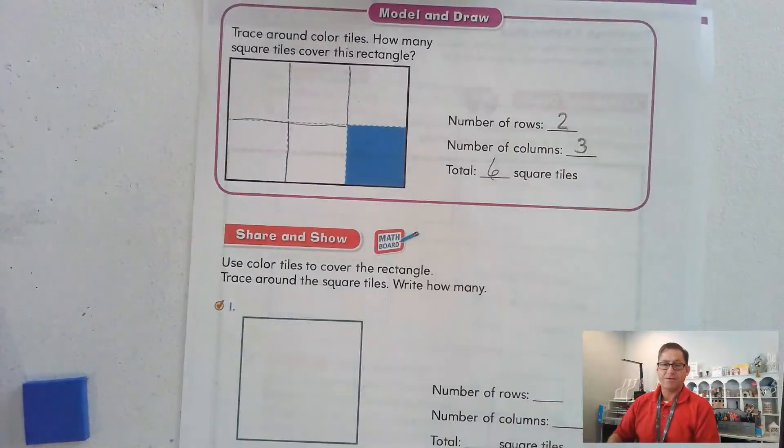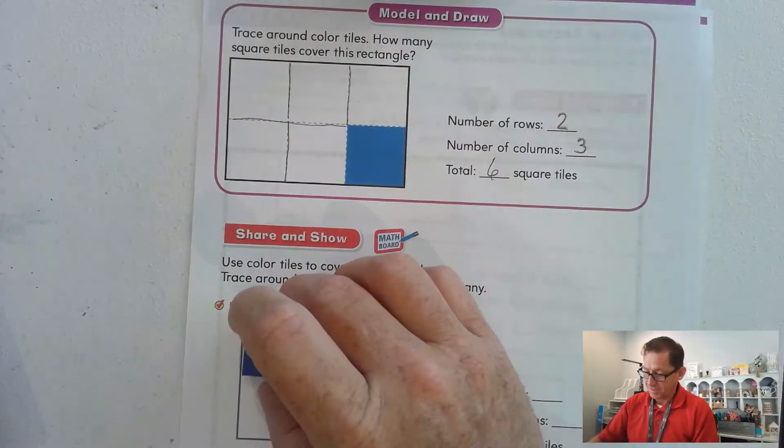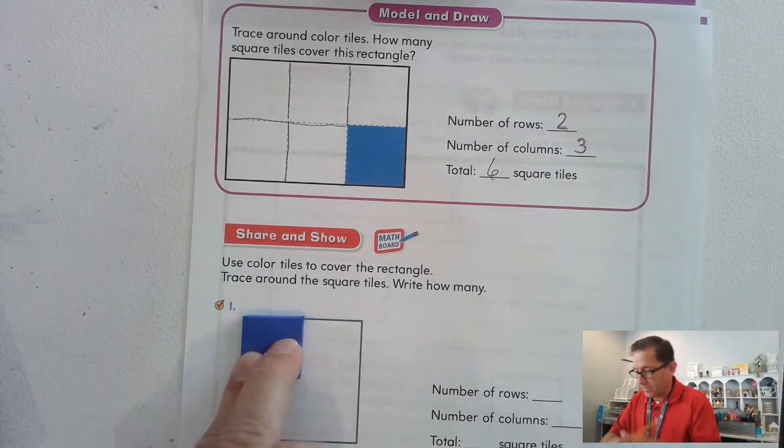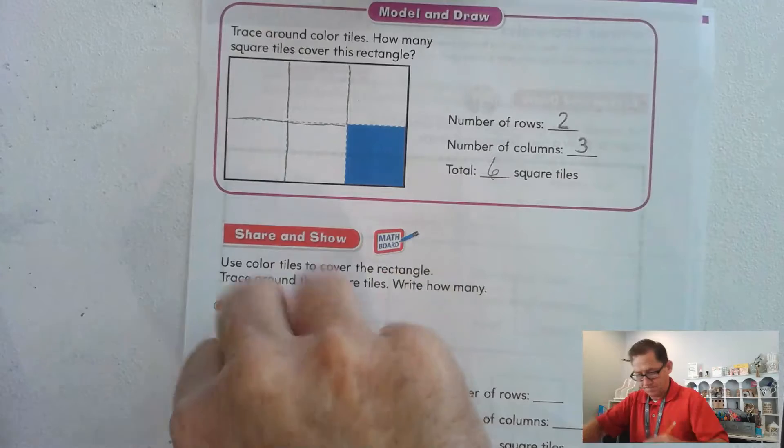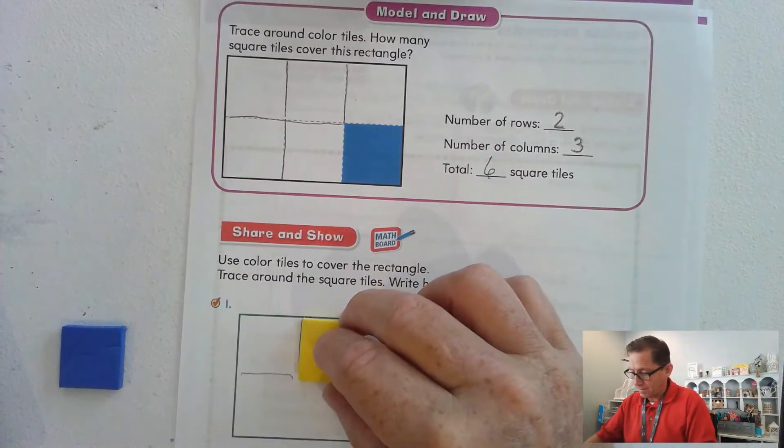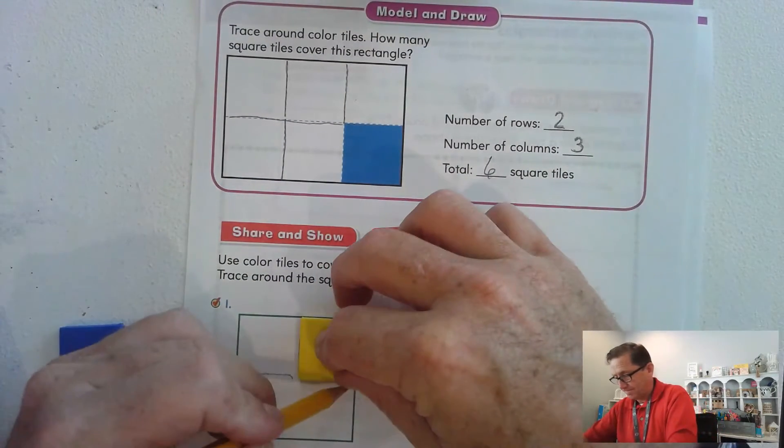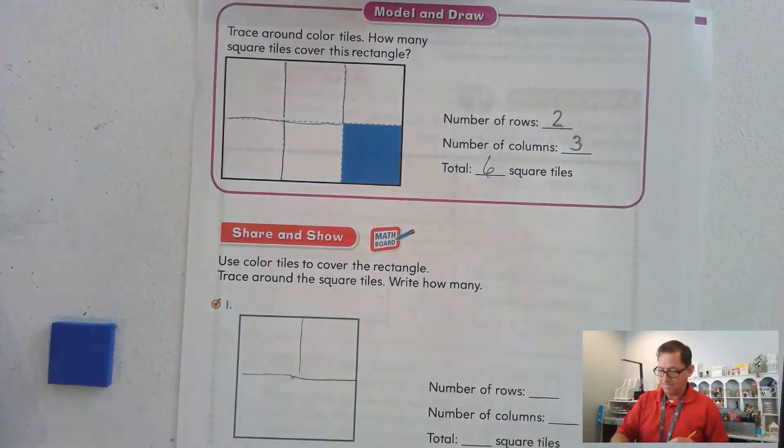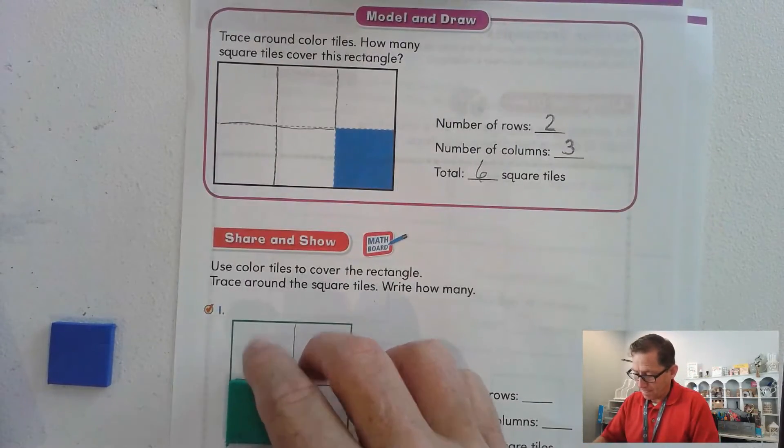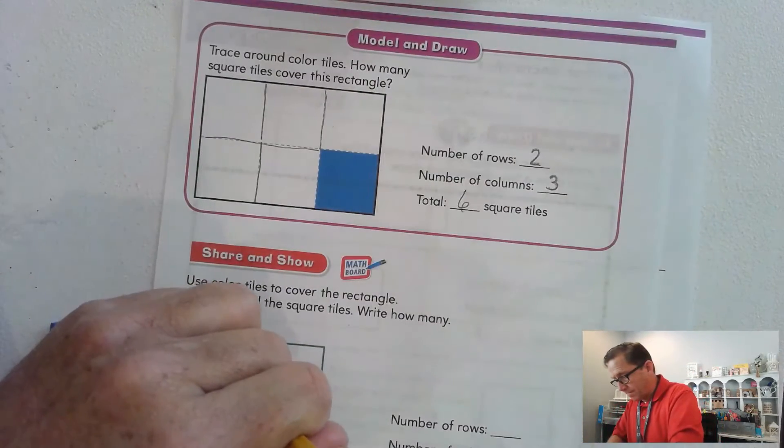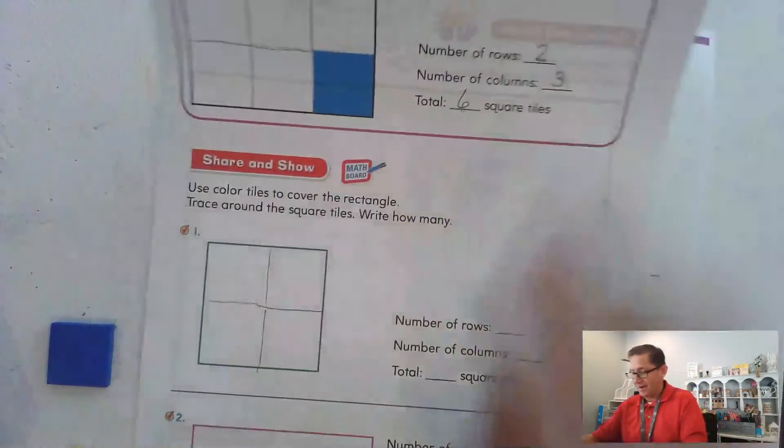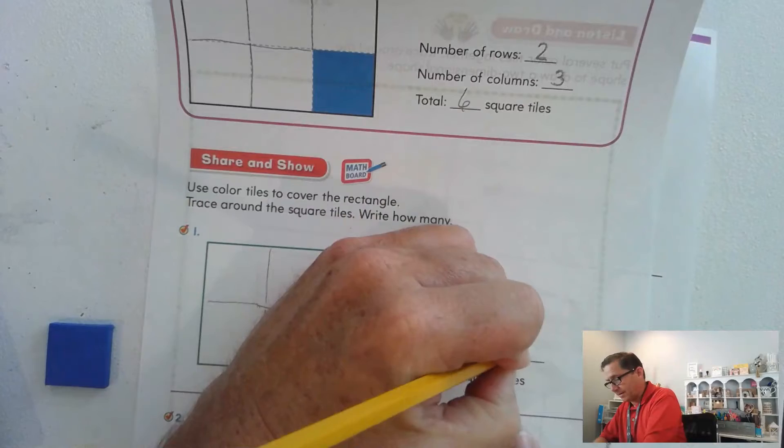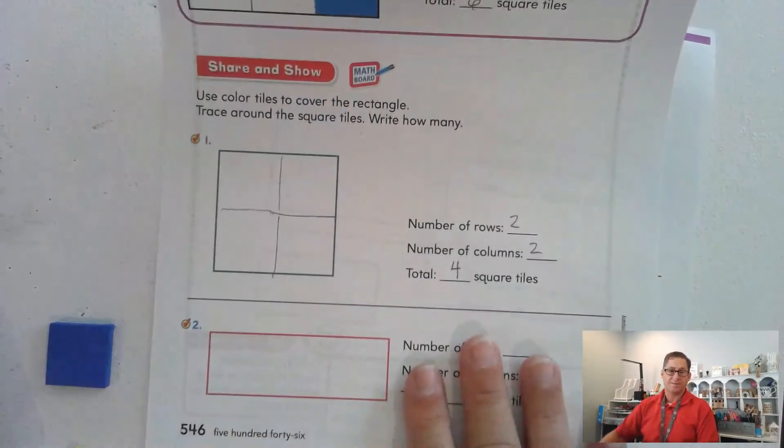Now use square tiles to cover this rectangle and trace around them. So here we have one. We have a second one. A third, and a fourth. So in this one, we have two rows of two for a total of four squares.